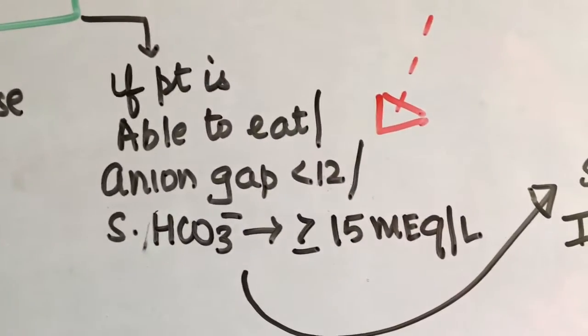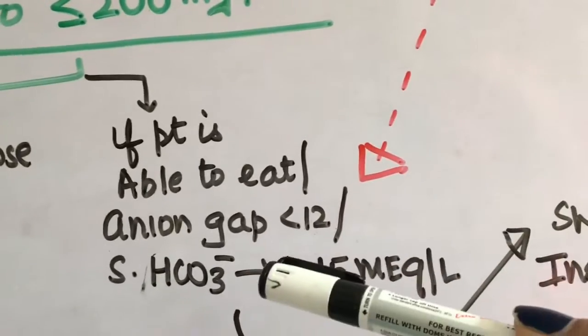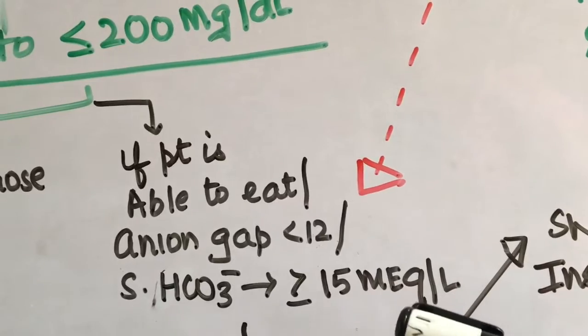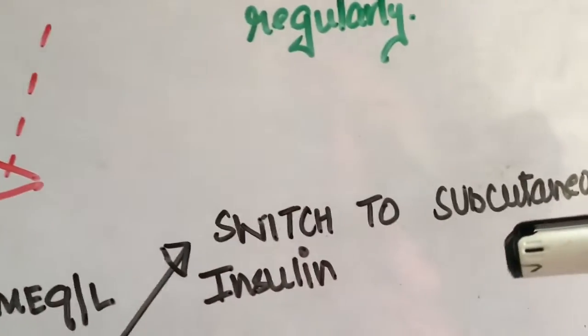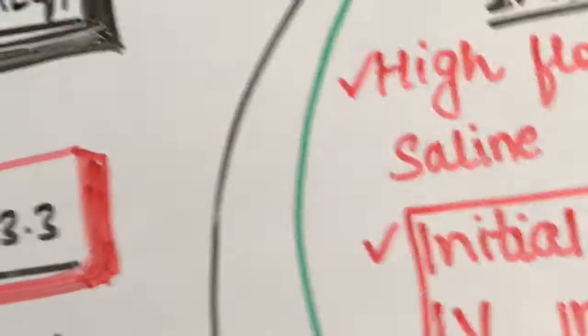Or if the patient is able to eat, or the anion gap is less than 12, or the serum bicarbonate levels are more than or equal to 15 milliequivalent per liter, you would switch to subcutaneous insulin, that is basal bolus. The next condition that comes to us is that if the serum potassium levels are less than 5.2 milliequivalent per liter...